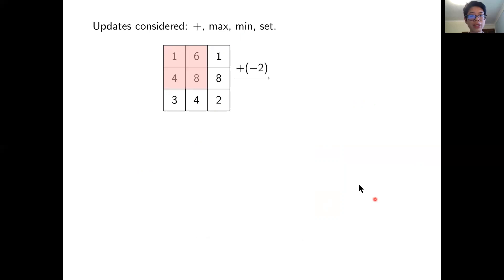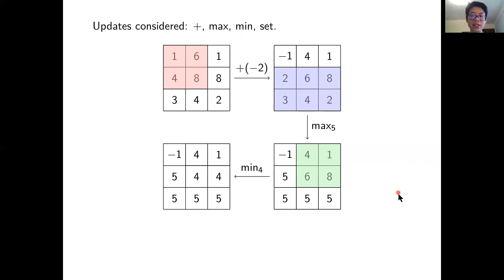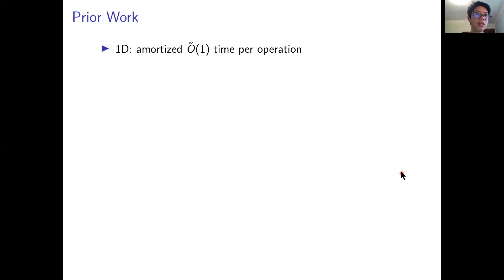We also consider adding a value — including a negative value — maximizing with a constant, and minimizing, the same as before. We consider the same set of operations for queries. In our model, complexity is measured as a function of n, where n is the number of updates and queries. We assume an arbitrarily large 2D array initially all zero, allow n operations, and measure complexity in terms of n.